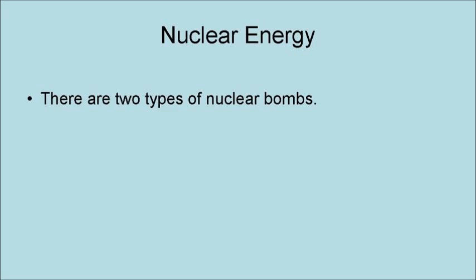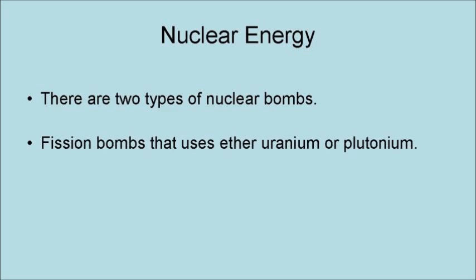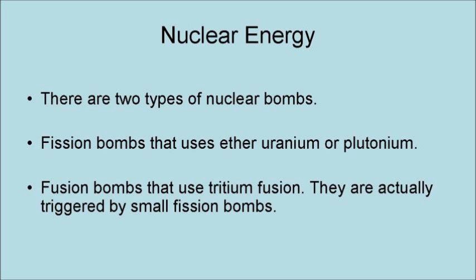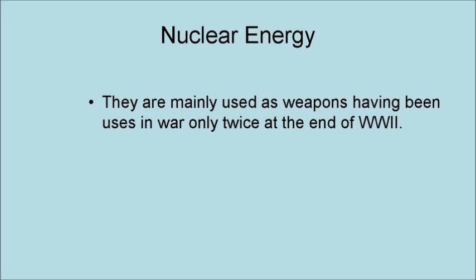There are two types of nuclear bombs: fission bombs that use either uranium or plutonium, and fusion bombs that use tritium fusion. Fusion bombs are actually triggered by small fission bombs. They are mainly used as weapons, having been used in war only twice at the end of World War II.